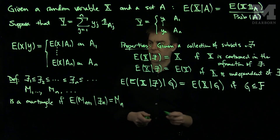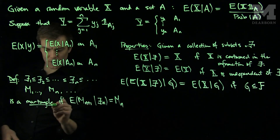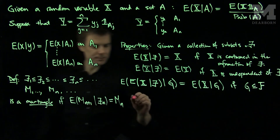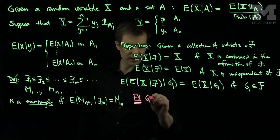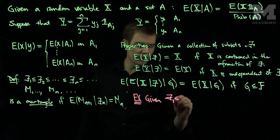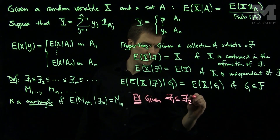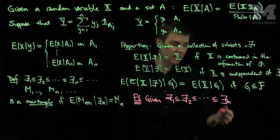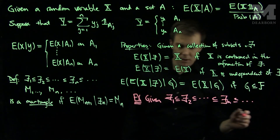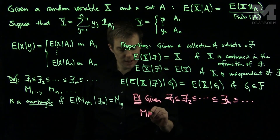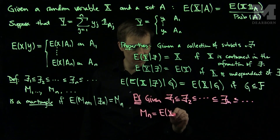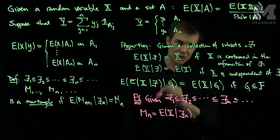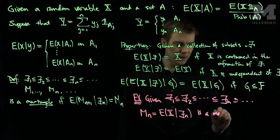We'll now see an example of how I can use the definition of a martingale and the properties of conditional expectation to construct a martingale. Given an increasing sequence of information — or finer and finer partitions of the probability space — and a random variable X, I will construct Mn as the conditional expectation of X given the nth bit of information. I claim this is a martingale sequence.